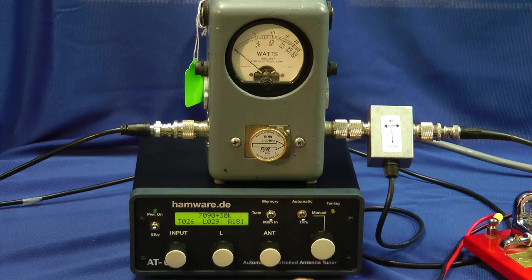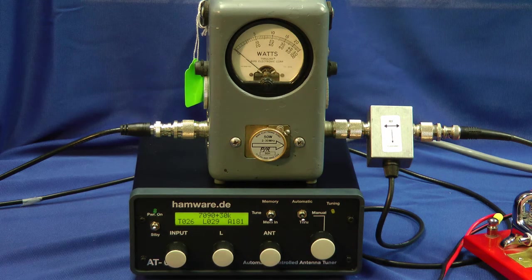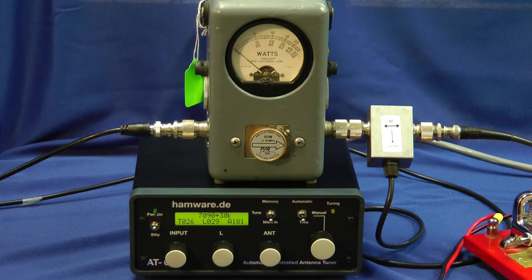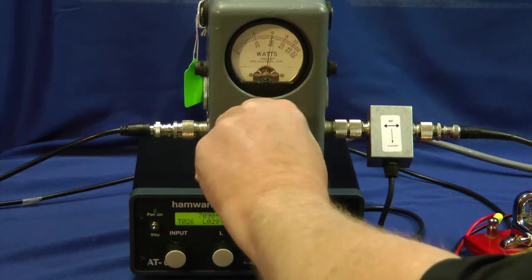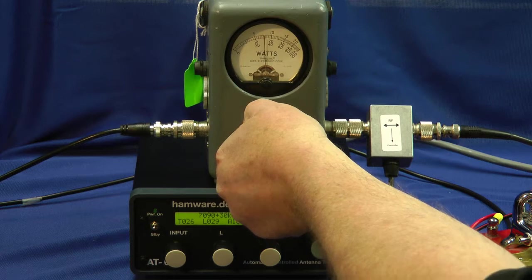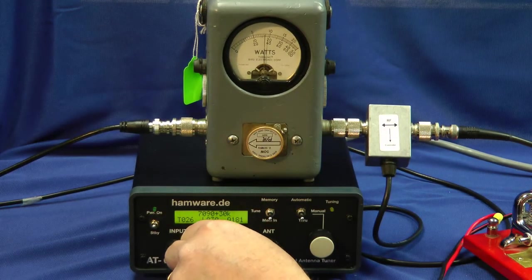This acts just like any other manual tuner at this point. Input, inductance, antenna controls, similar to other antenna tuners. So, to adjust it, it's going to look at the forward power first, and then flip the slug over for reflected power, and we're going to try to minimize that using the various controls.